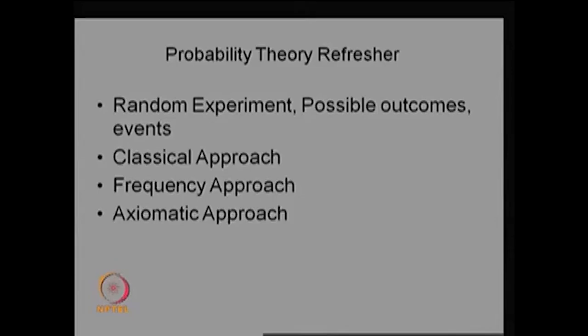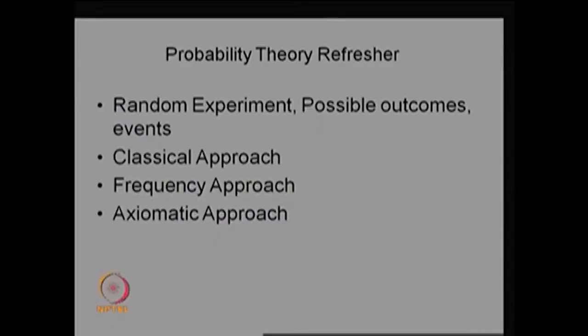For that we need probability theory in detail. Even though we cannot explain the whole probability theory completely, I am just giving a refresher — defining what is probability, what is a random variable, and so on. I will cover whatever probability theory knowledge is needed for the stochastic process in this lecture and the next. Detailed concepts will be explained whenever they come into the picture.